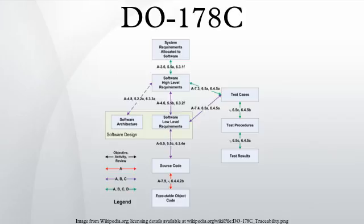DO-178C, Software Considerations in Airborne Systems and Equipment Certification, is the title of the recently published document from RTCA, Inc., in a joint effort with EUROCAE. This replaces DO-178B as the primary document by which the certification authorities such as FAA, EASA, and Transport Canada will approve all commercial software-based aerospace systems. The new document was completed in November 2011 and approved by the RTCA in December 2011.